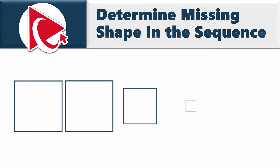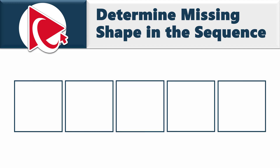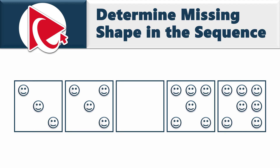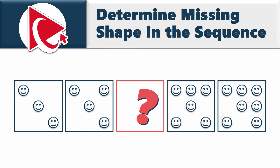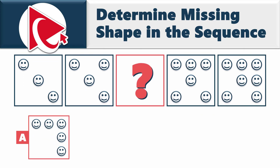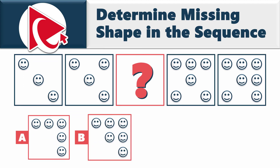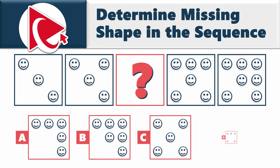You're presented with a series of shapes. Each square has smiley faces inside. There are five squares and the middle square is missing. You need to select the answer for the missing square out of four possible choices: Choice A, B, C, and D.